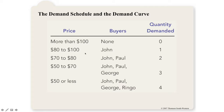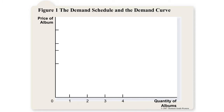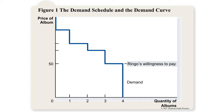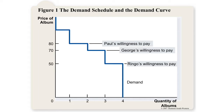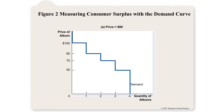On a graph, at a price over $100 all consumers drop out. Between $80 and $100 there's demand for just one product; between $70 and $80 John and Paul are willing to buy; between $50 and $70 John, Paul, and George are willing to buy; and under $50 all four would buy. This creates what's called a stepped demand curve, with Ringo at $50, George at $70, Paul at $80, and John at $100.